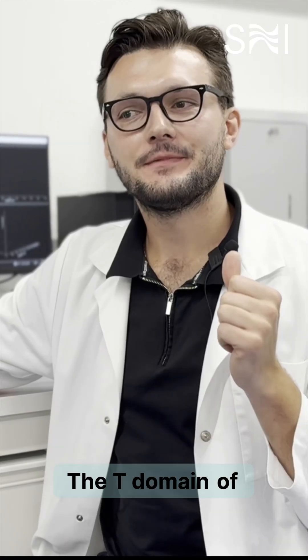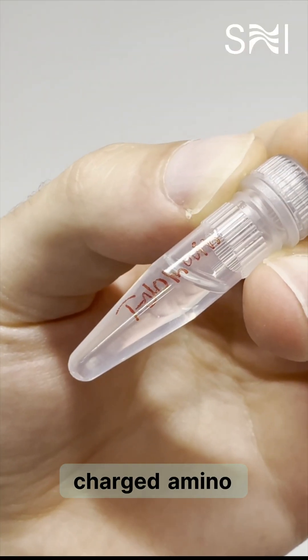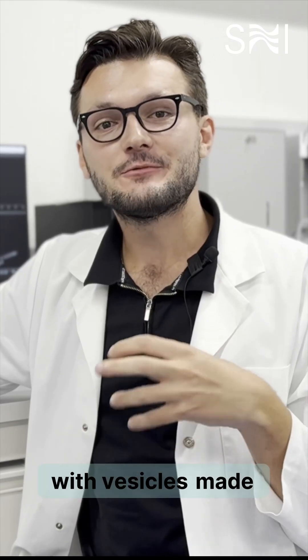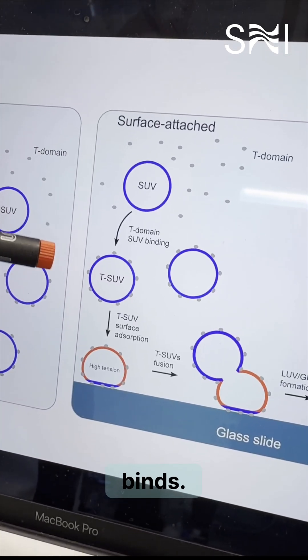Here is how it works. The T domain of diphtheria toxin is rich in positively charged amino acids. When it's mixed with vesicles made of negatively charged lipids, then the T domain binds.